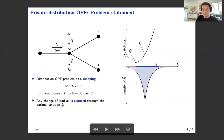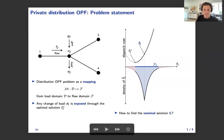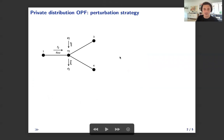So, we can provide privacy for loads through randomization and also ensure feasibility of distribution OPF. But the question is, how to find this nominal solution? And to find the solution, we propose the following perturbation strategy for generators and local DR substation.